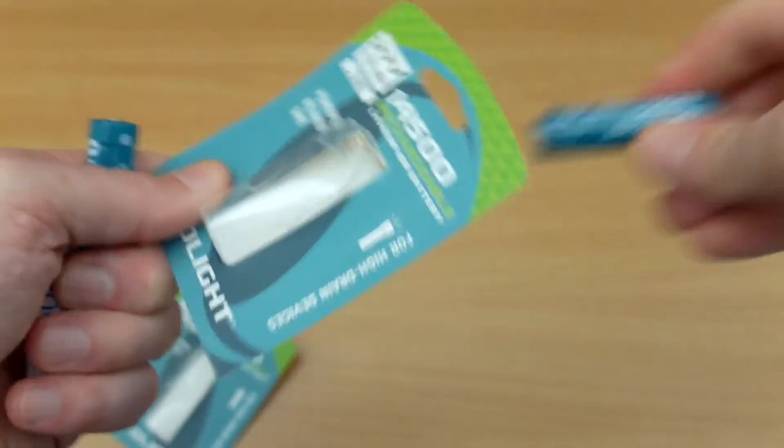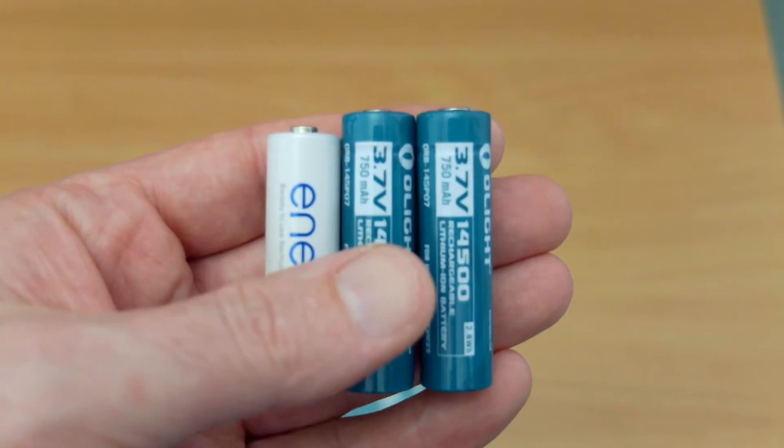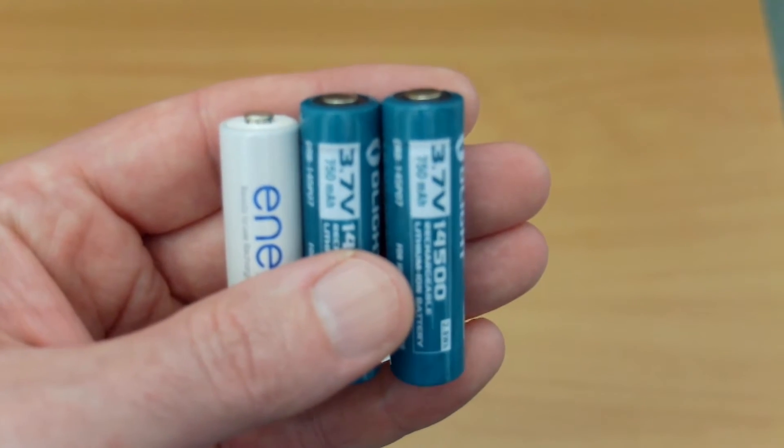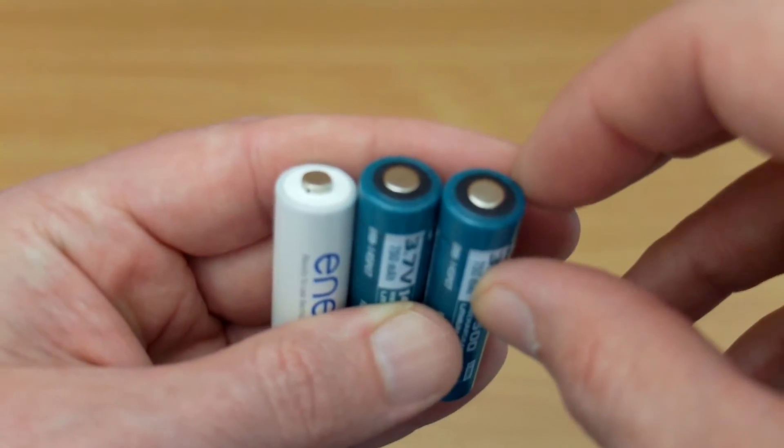Just push down firmly and they come out. Now comparing them to an Eneloop, which is very much a standard size AA battery, you will see that they are longer. Now that is because of the protection circuit, but there are also some other differences.